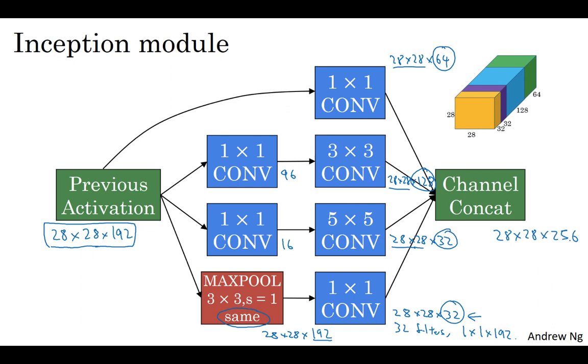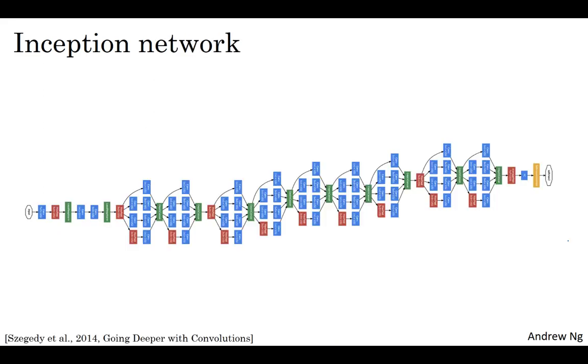So this is one inception module. And what the inception network does is more or less put a lot of these modules together. Here's a picture of the inception network taken from the paper by Szegedy et al. And you notice a lot of repeated blocks in this. Maybe this picture looks really complicated. But you look at one of the blocks there. That block is basically the inception module that you saw on the previous slide.